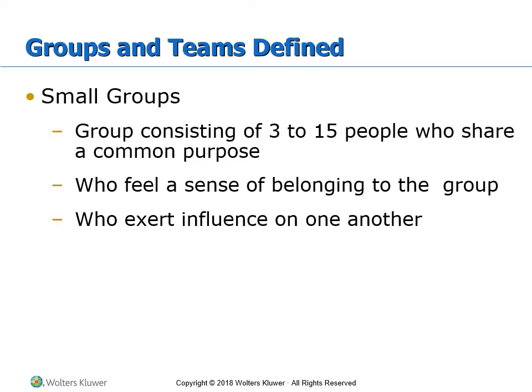Let's define groups and teams. We're looking at small groups — groups consisting of 3 to 15 people who share a common purpose, feel a sense of belonging to the group, and who exert influence on one another. The most obvious group for most of you is the cohort you're in. I'll use class examples because you can see purpose, belonging, and different roles as you've seen each other grow throughout the program.